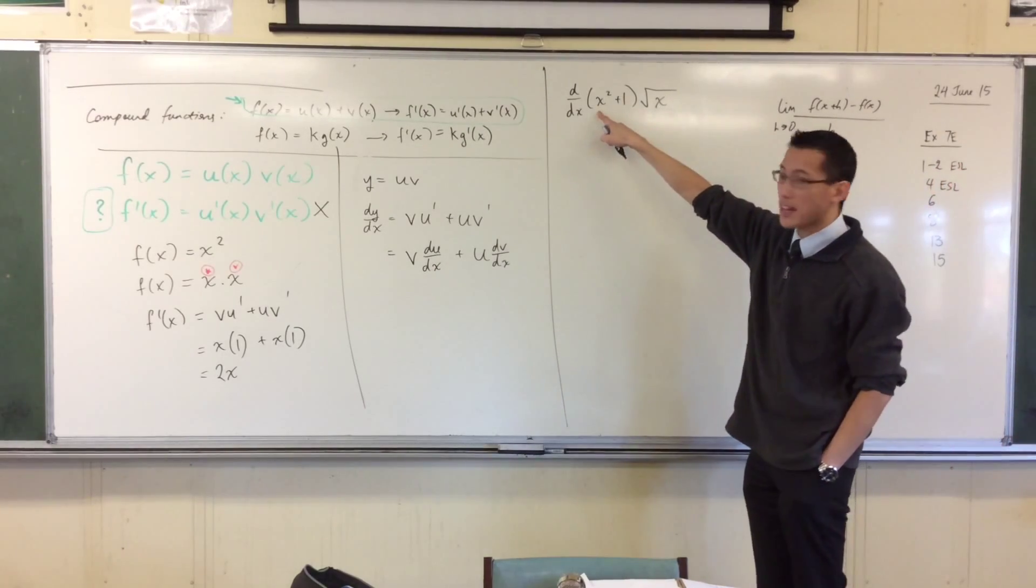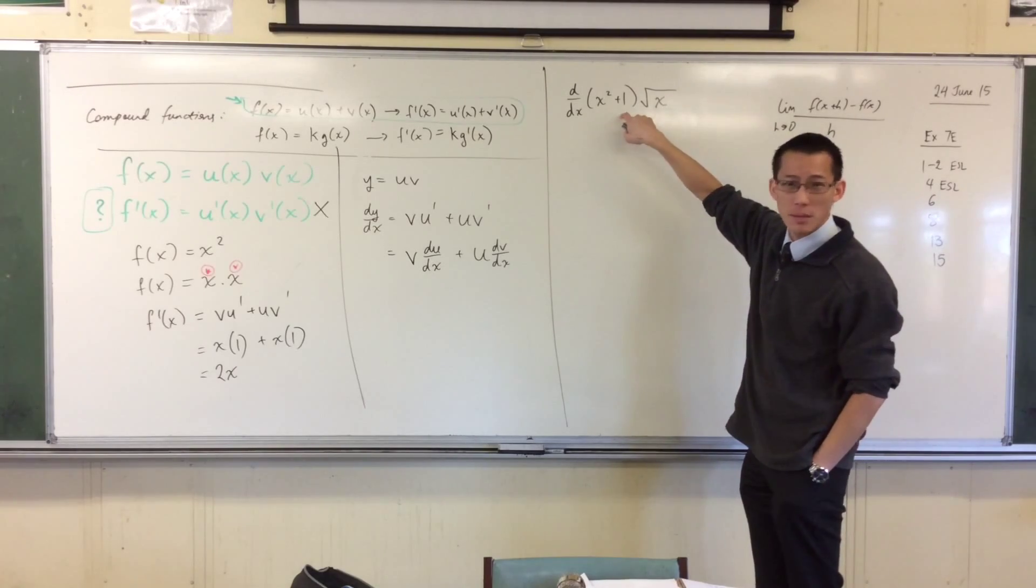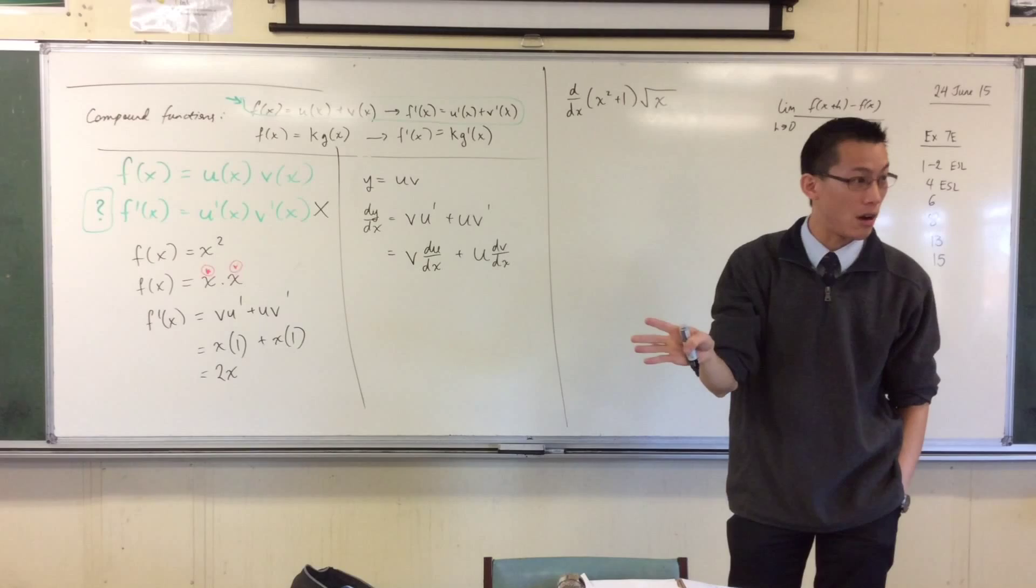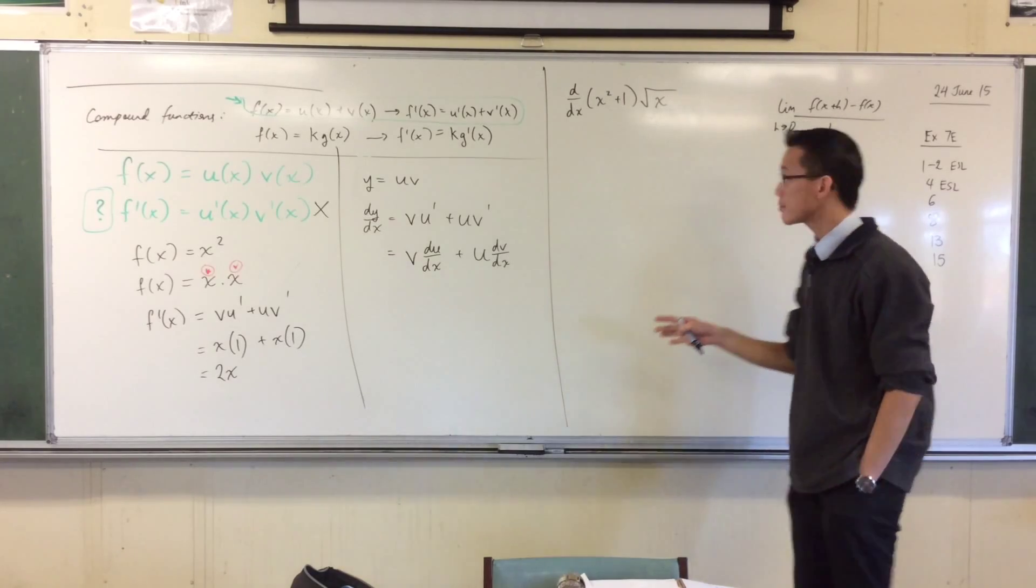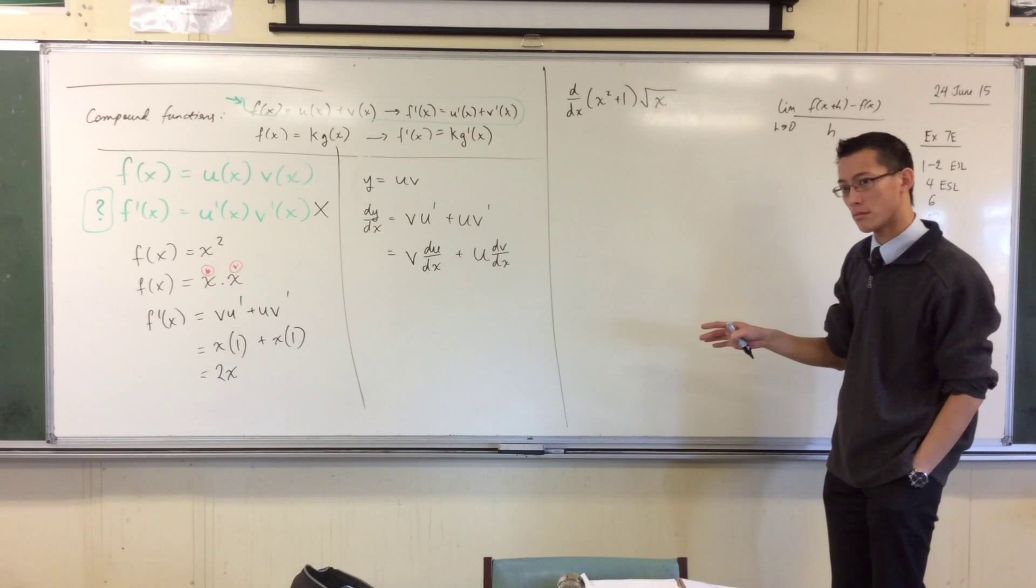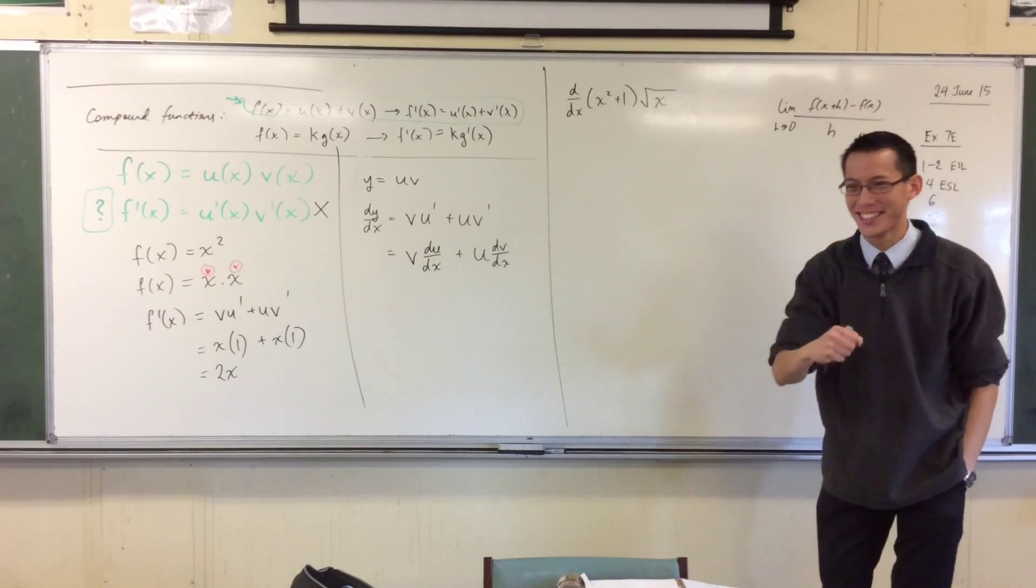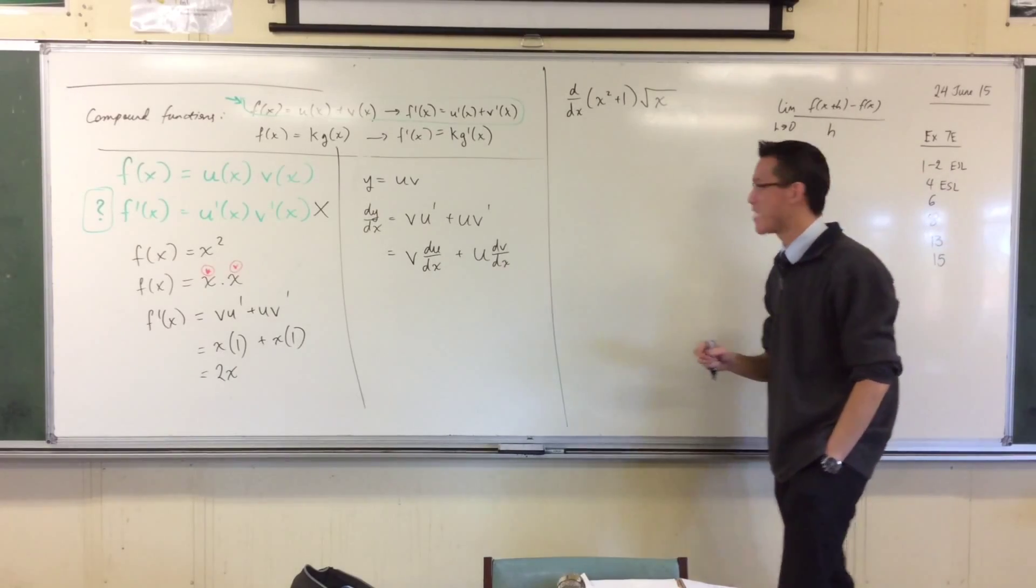I could do, that would be x to the power of 5 on 2, the next would have half, and then I could just treat it as powers. Index laws, hooray! Go home, Raph, you're drunk.